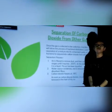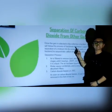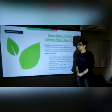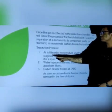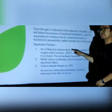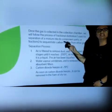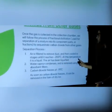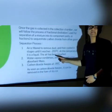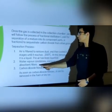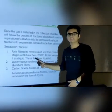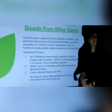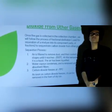Separation of carbon dioxide from other gases: Once the gas is collected in the collection chamber, it can be separated from other gases by the process of fractional distillation. The process is as follows. First, the air is filtered to remove any dust particles and then it is cooled in stages until it reaches minus 200 degrees Celsius. At this temperature, the air is liquefied. The water vapor condenses and is removed using absorbent filters. Carbon dioxide freezes at minus 79 to 80 degrees Celsius. As soon as the carbon dioxide freezes, it can be removed in the form of dry ice.